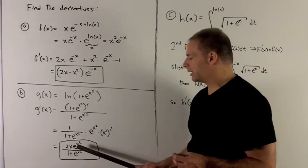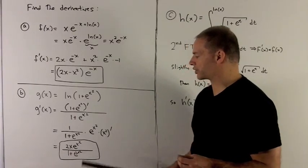Collecting everything together, I get 2x e to the x squared over 1 plus e to the x squared.